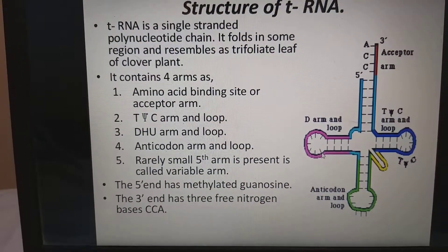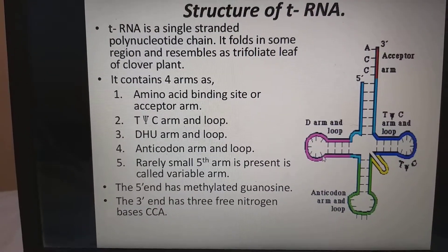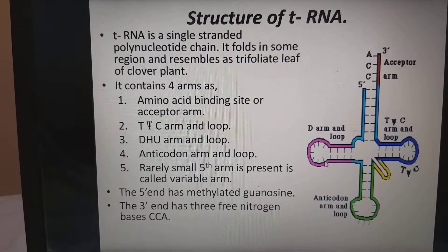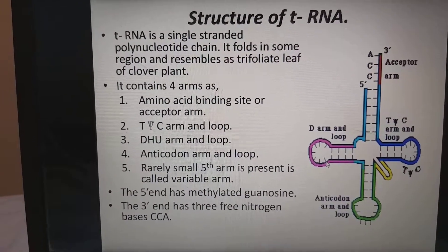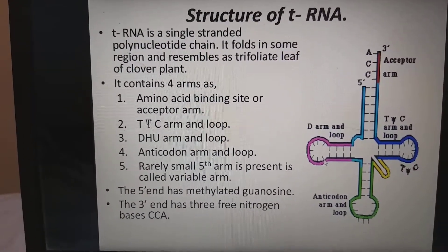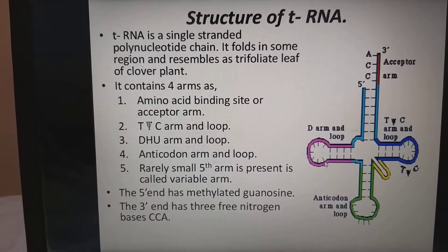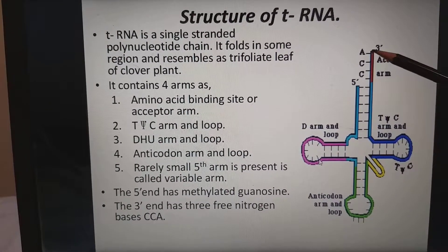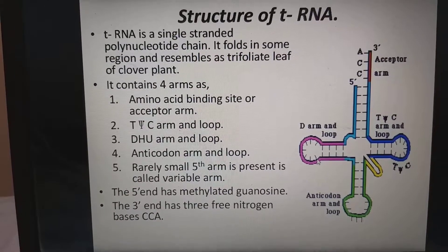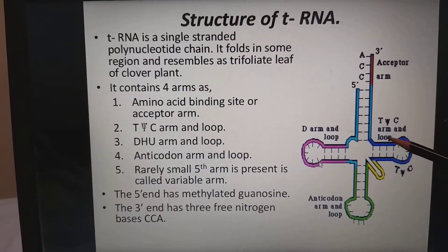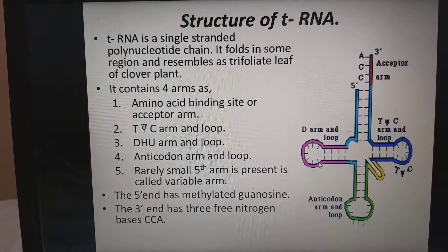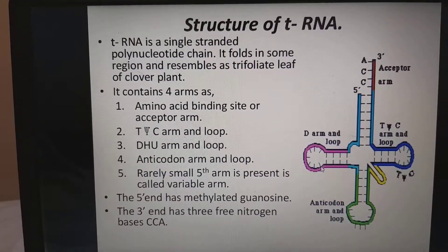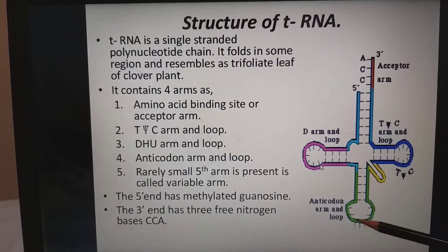Structure of tRNA: tRNA is a single-stranded polynucleotide chain that folds in some regions and resembles a trifoliate leaf of a clover plant — hence the name cloverleaf model. It contains four arms: the amino acid binding site or acceptor arm (ACC), the TΨC arm and loop, the DHU arm and loop, and the anticodon arm and loop. Rarely, a small fifth variable arm is also present.